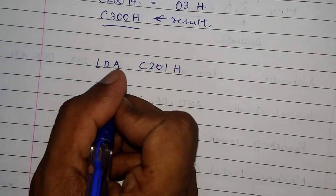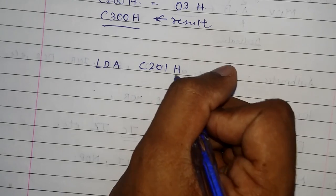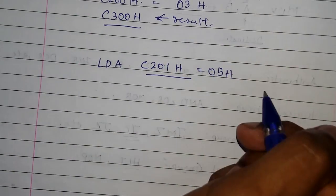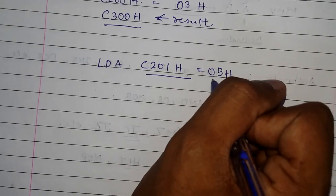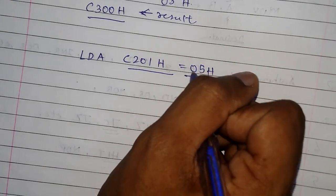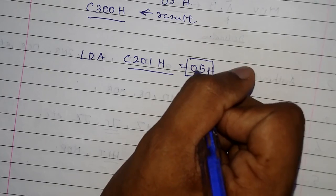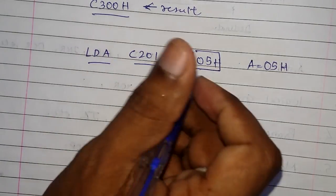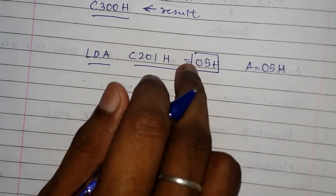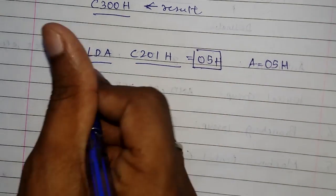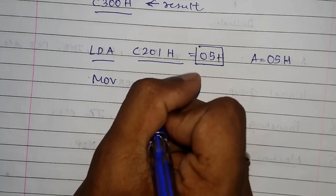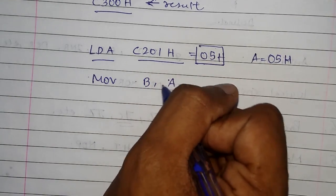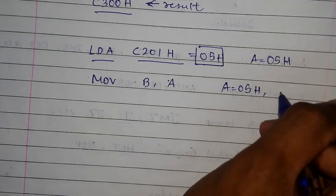The first instruction is LDA — Load Accumulator Direct. The memory location C201H has 05H in it, and this content will be loaded into the accumulator when we execute this instruction. After execution, we have 05H in the accumulator.